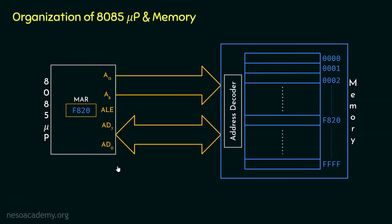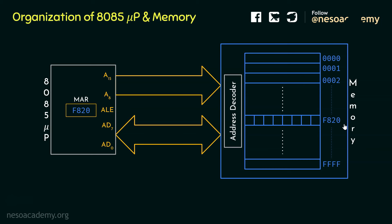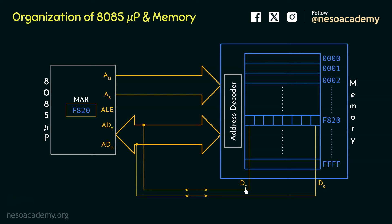Since the 8085 is an 8-bit microprocessor — it can work on 8 bits of data — the associated memory is also constructed so that every memory location is 8 bits wide. Within the memory, all the bits of all the different locations are connected to the data channel of the memory, named D0 to D7. These are bidirectional channels, which are in turn connected with AD7 to AD0 of the 8085 microprocessor.